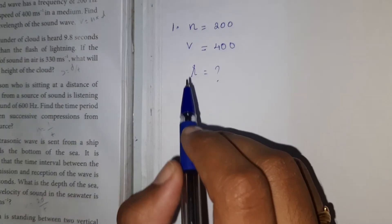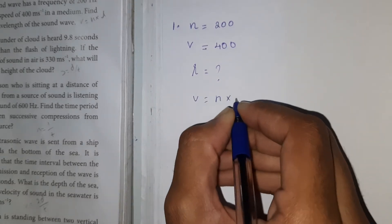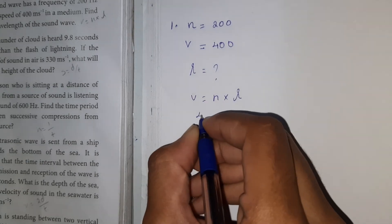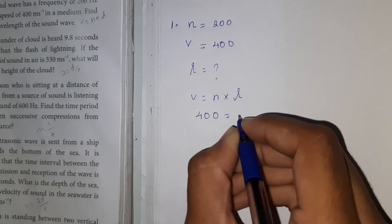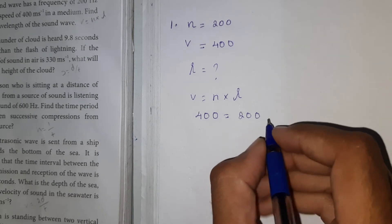The formula is v = n × λ. So v is 400, which equals n times lambda. n is 200, so 400 = 200 × λ.